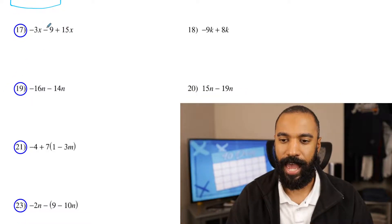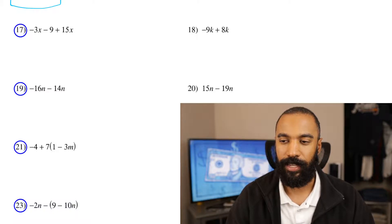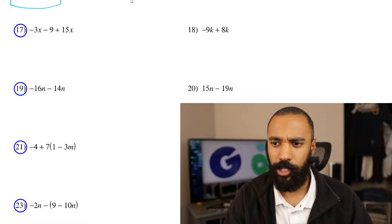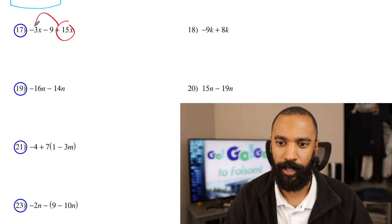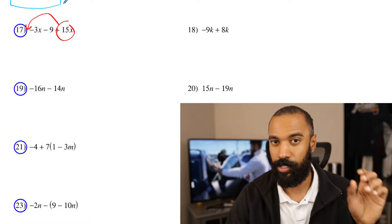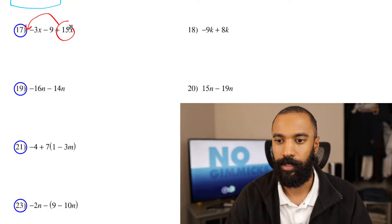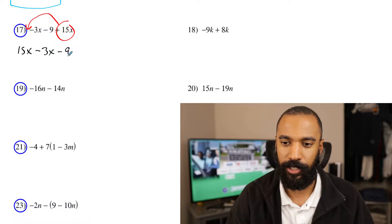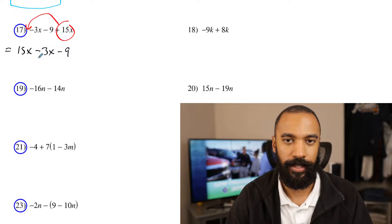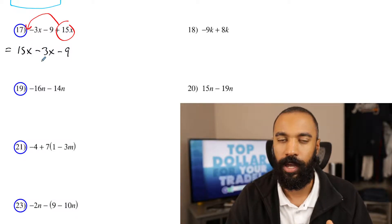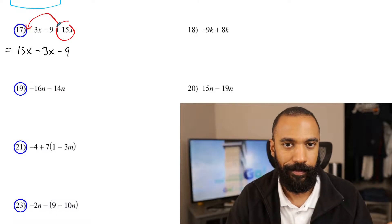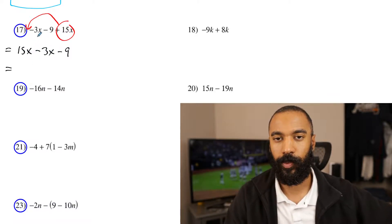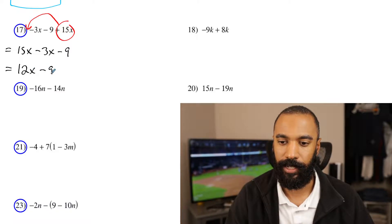Number seventeen: negative 3x minus 9 plus 15x. Let's try reordering without crossing things out — place the 15x in front, especially since it's larger and positive. Rewritten: positive 15x minus 3x minus 9. Now the x terms are together. 15x minus 3x combines to become 12x. And we've got minus 9. So the answer is 12x minus 9.